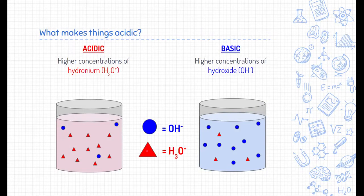So again, just to reiterate, what makes things acidic is the concentrations of either hydronium or hydroxide. Hydronium H3O plus, if there's a higher concentration of those H3O plus particles, then it's an acid. On the opposite spectrum, if there's a low concentration of hydronium and a higher concentration of hydroxide, it's a base.